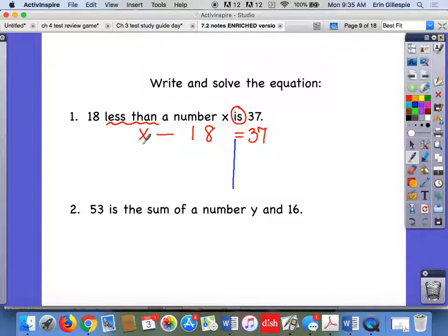Draw my line. There's my variable. I want to do the opposite. So I'm going to add 18 to both sides. That's going to give us X equals 55.